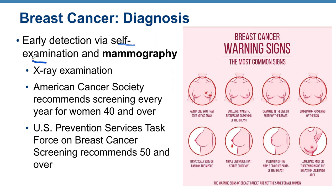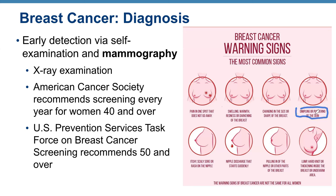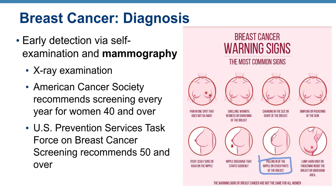Common signs to watch for during self-examination include: persistent pain in one spot, swelling, warmth, redness or darkening of the breast, change in size or shape (the affected breast may actually get smaller), dimpling or puckering of the skin, achy, itchy, scaly, sore, or rash on the nipple, sudden nipple discharge, pulling in of the nipple, and a lump, hard knot, or thickening inside the breast or underarm area.